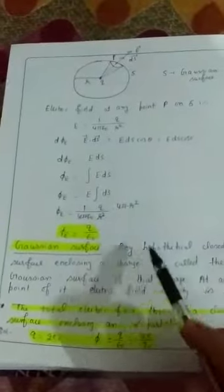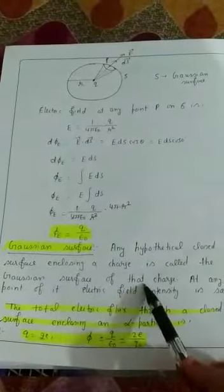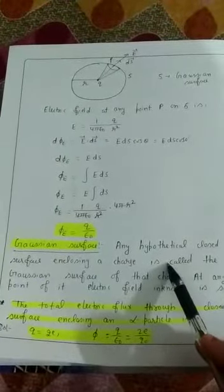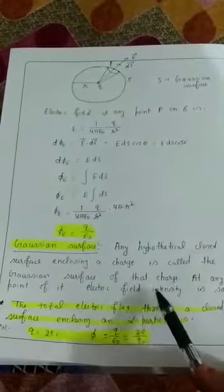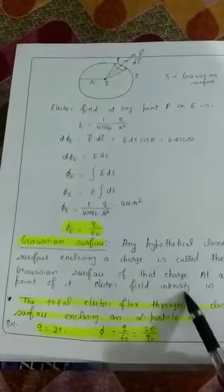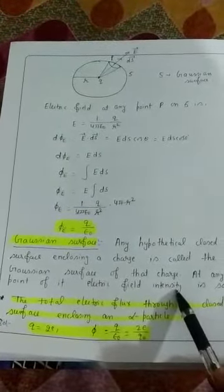Gaussian surface is a hypothetical surface which encloses the charge. At any point of Gaussian surface, the value of electric field intensity is the same.